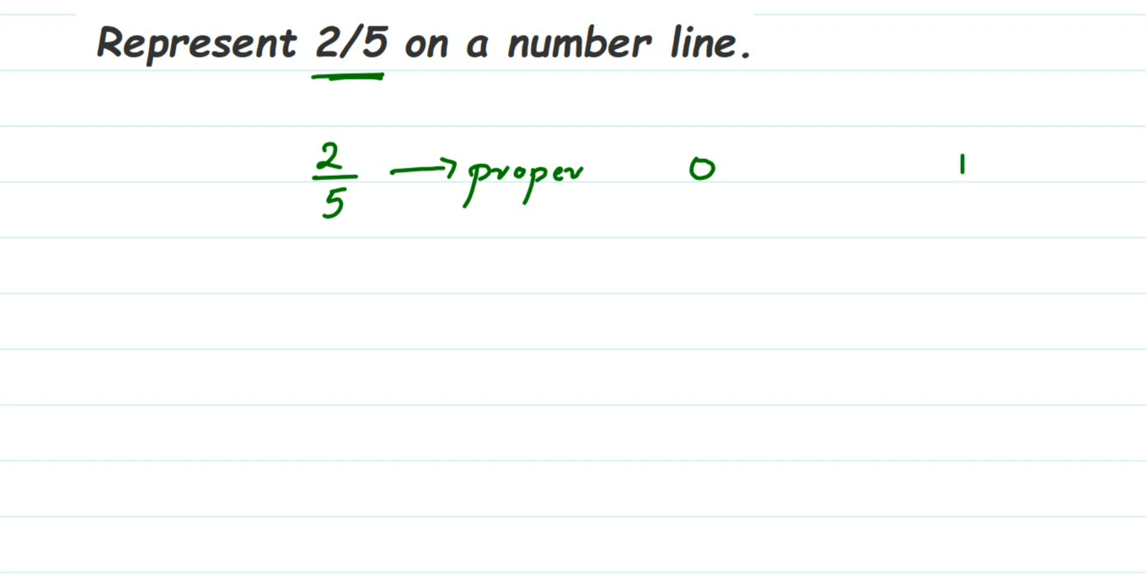This number will come somewhere between 0 and 1. Now what is a proper fraction? If you don't know what a proper fraction is, whenever the numerator, this is the numerator, whenever the numerator is smaller than the denominator, it's called a proper fraction. So they always lie between 0 and 1. Now let us plot this.